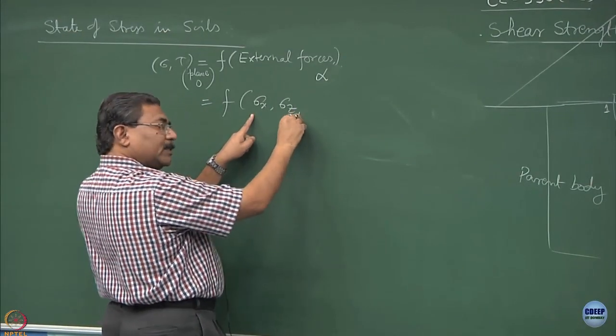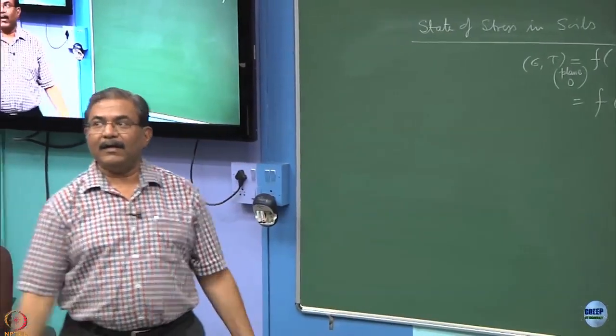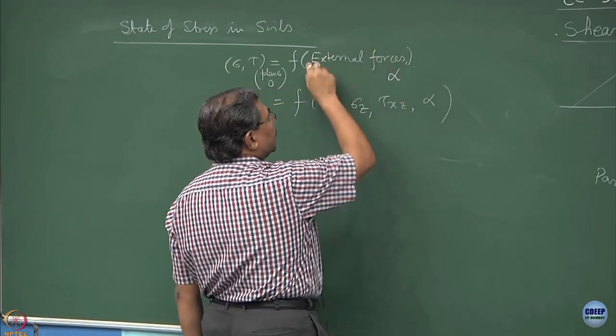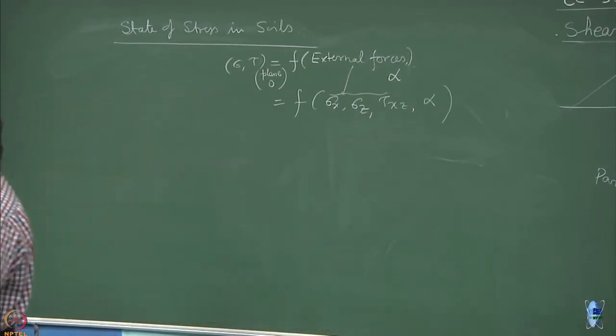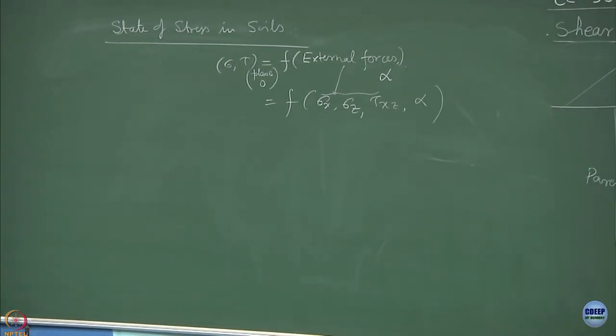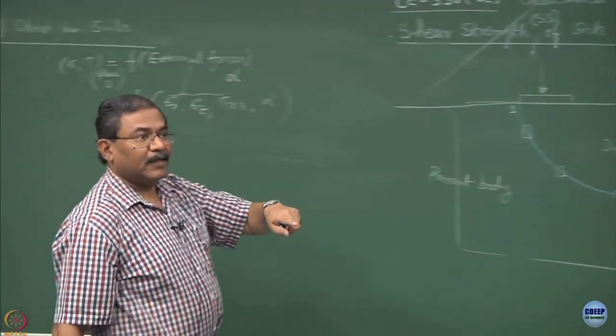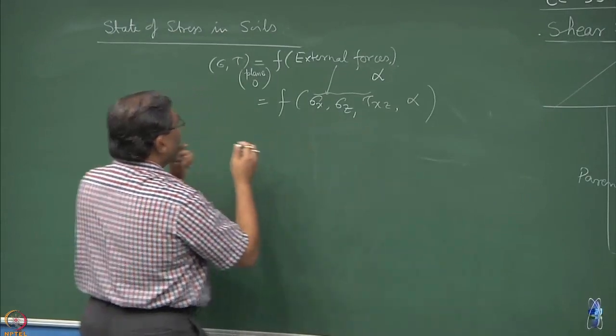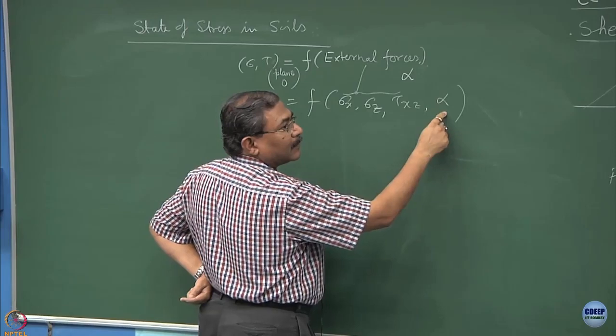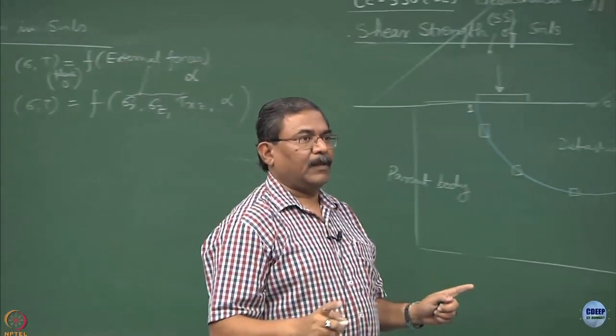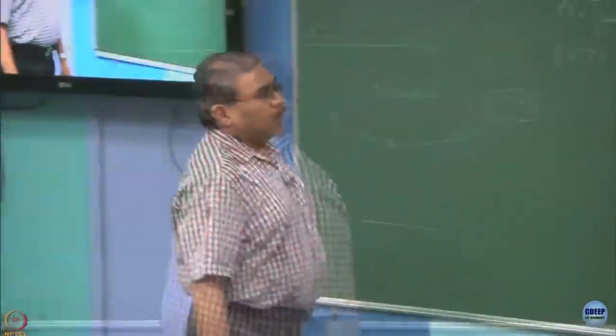Sigma x sigma z, what else is going to come? Tau xz, very nice, what else? Alpha. So what I have done, all these forces, external forces, I have converted into stresses. In geomechanics engineering sciences and engineering technology we do not talk about the force ever, we always talk about the stresses. Though the forces are acting on a system, we convert them into stresses. What I am interested in is I am interested in finding out sigma and tau as a function of sigma x, sigma z, tau zx, alpha. This is the state of stress which is existing at a given point and this point lies on the plane at which the failure is going to take place. Let us start this process.